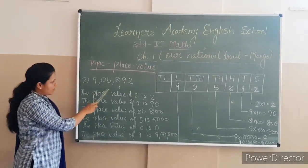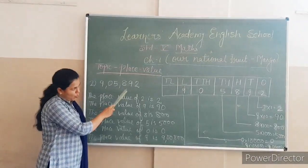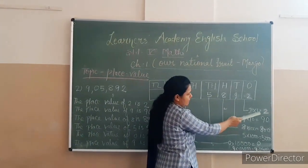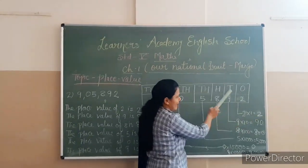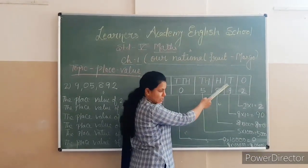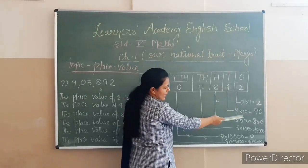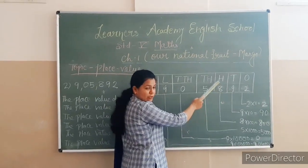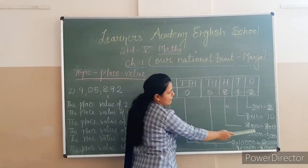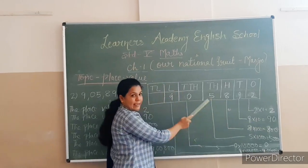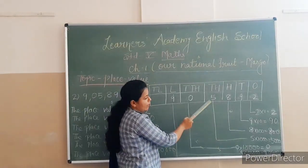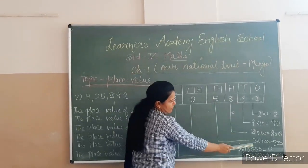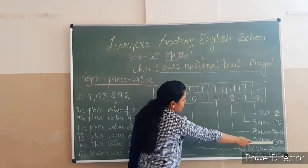The next example is 5,892. So, 2 is in the position of the 1s, so 2 multiplied by 1 equals 2. Next, 9 is in the position of the 10s, so it will be multiplied by 10, giving 90. And 8 is in the position of the 100s, so 8 multiplied by 100 equals 800. Next, 5 multiplied by 1000 equals 5000.